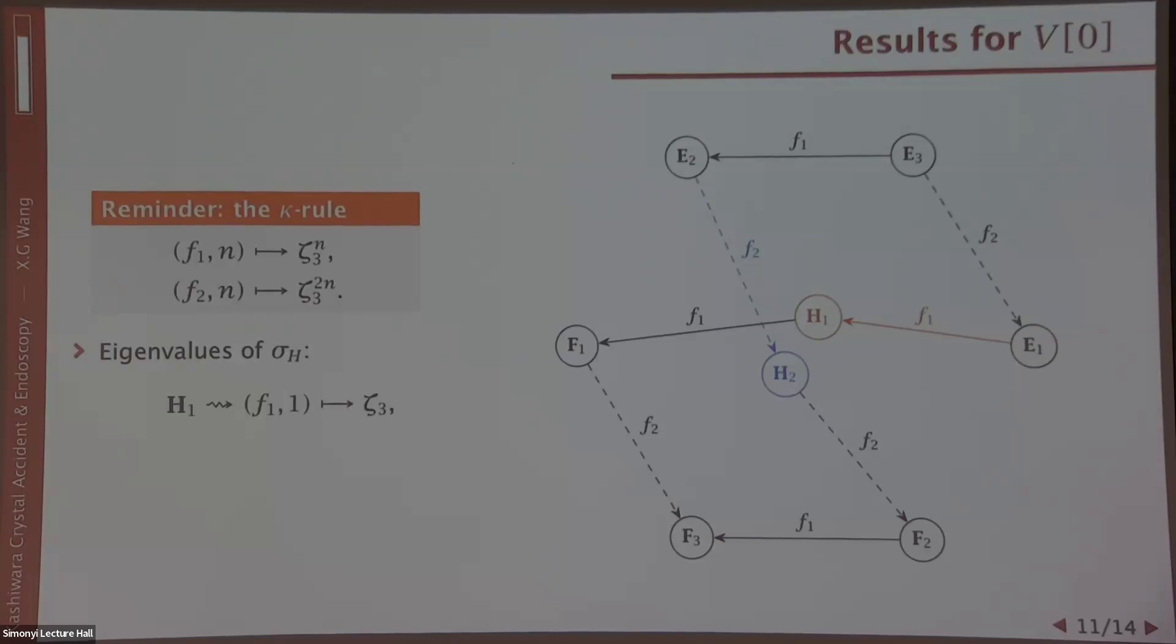Let's see it in action. The kappa rule here, I listed here, and here's the graph for V bracket zero. We have H1 and H2. We take H1 first, and we look at the diagram. We see we have one single F1 arrow pointing to it, so it induces a pair (F1, 1). According to the rule above, it gives the number zeta 3 to the first power. For H2, it has a single F2 arrow pointing to it, so it induces the pair (F2, 1). According to the rule, you get zeta 3 squared. If you regain your ability to do linear algebra, you can compute the sigma h action on V bracket zero and see these are indeed the eigenvalues. This is our first example.